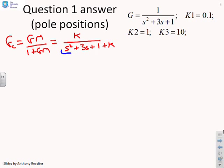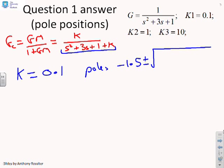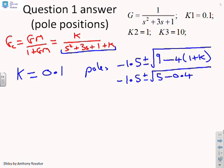And most critically, you'll see that this denominator, this is the closed-loop pole polynomial. So now we want to solve for the pole positions. If K equals 0.1, then we've got poles that are going to be at minus 1.5 plus or minus the square root of 9 minus, and then it's going to be 4 into 1 plus K. So we'll give the whole formula. And obviously if K equals 0.1, that gives you minus 1.5 plus or minus the square root of 9 minus 4, which is 5. So you're going to get 5 minus 0.4. I'm not actually going to solve those in any more detail. You can calculate that yourself precisely if you need to.